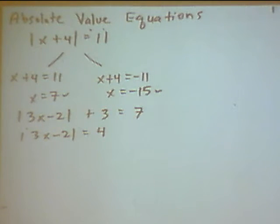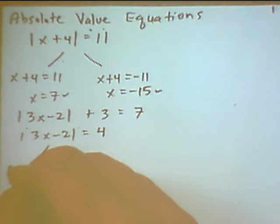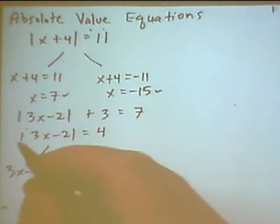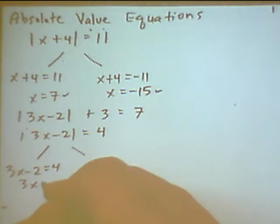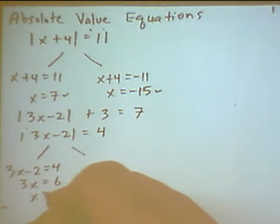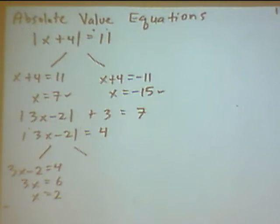So now I check my number. My number is positive. So I'm going to break this up into two problems. The first problem, I drop the absolute value signs and solve this equation. Add 2 to both sides. Divide both sides by 3. It looks like I have a solution of x equals 2.